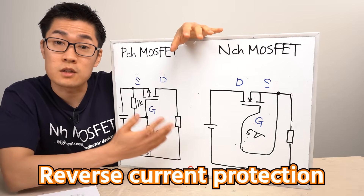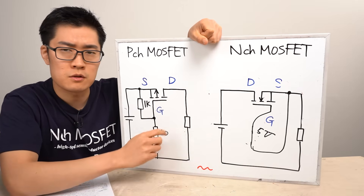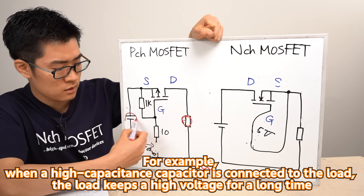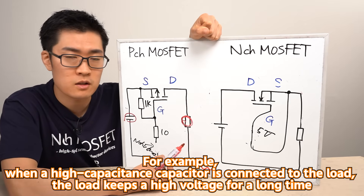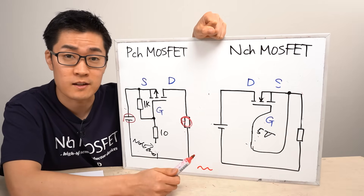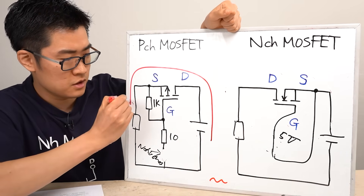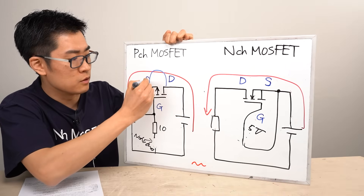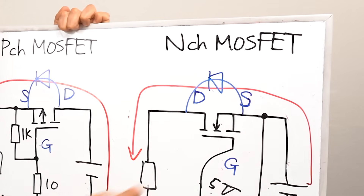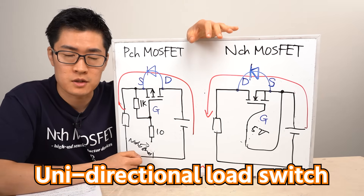Another key function of load switches is preventing reverse current flow. Current naturally flows from higher to lower voltage, so if the load voltage becomes higher than the power supply voltage, current may flow in the reverse direction. To simulate this scenario — where the load could be a battery — we swap the positions of the power supply and load. As a result, current now flows in reverse through the MOSFET's body diode. Since this configuration allows current to flow in only one direction, it's known as a unidirectional load switch.